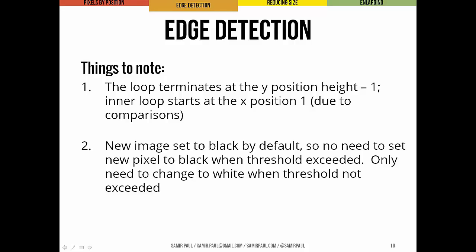A couple of things to note. The outer loop terminates at y position height minus one because bottom pixels are examined at position y+1. The inner loop starts at x position one because left positions are examined at x-1. This prevents accessing pixels outside the image bounds. Also, we don't need to explicitly set new pixels to black when the threshold is exceeded because the new image is already black by default — RGB values default to zero — so pixels are only changed to white when the threshold is not exceeded.